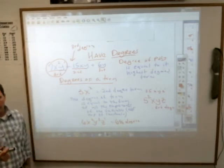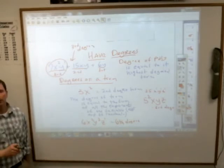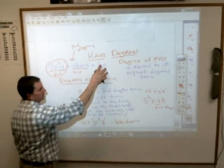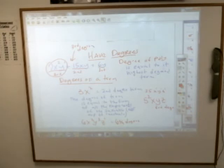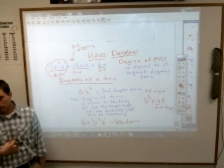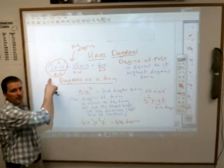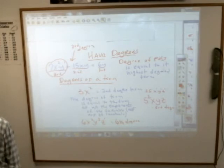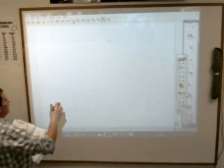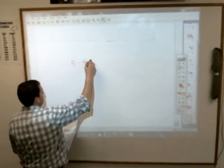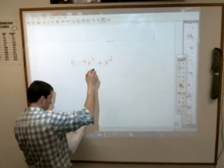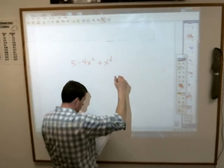Usually we try to order the polynomial in descending order of the degrees of the terms — put the biggest degree term first, then the next, then the next. That's just how math people like to organize it. Let's do this problem: 5 minus 4x squared plus x cubed minus 6x. First, what is the degree of that polynomial?